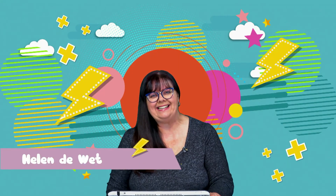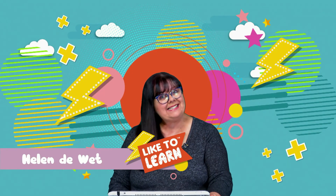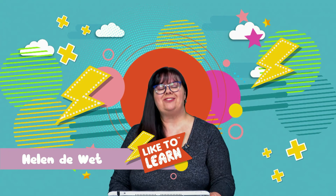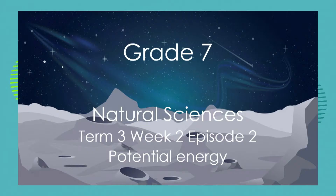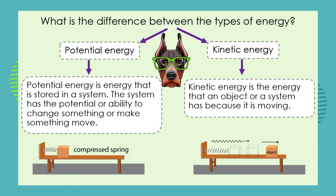Hello Grade 7s, Helen here, and that means it's time for your natural sciences lesson. What we're going to be focusing on today is potential energy. In our last lesson we made it clear that there were two big main different types of energy: potential energy and kinetic energy.